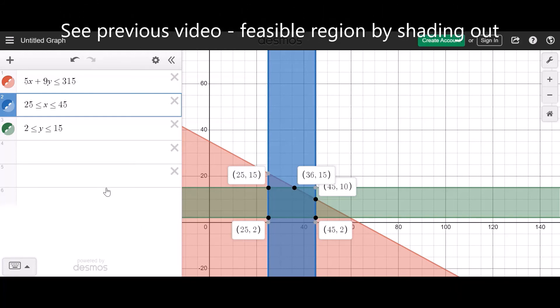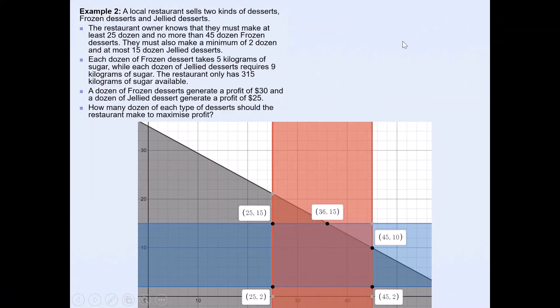Please do watch my previous video on the other method which is shading out which will leave the feasible region as the unshaded area. It's easy to spot the feasible region that way. So if you have difficulty spotting where it is I just need to reverse these signs. Right, so now I've got the feasible region clearly identified and I also know the vertices for that feasible region.